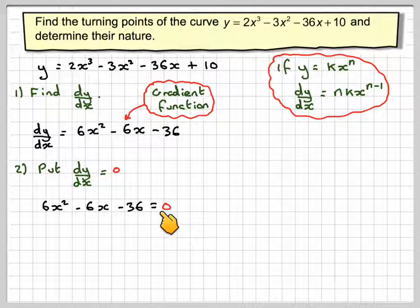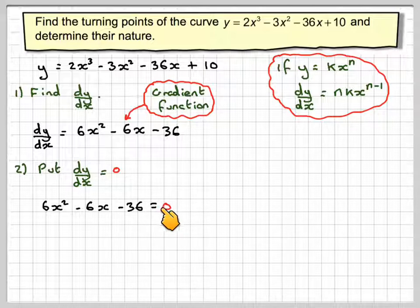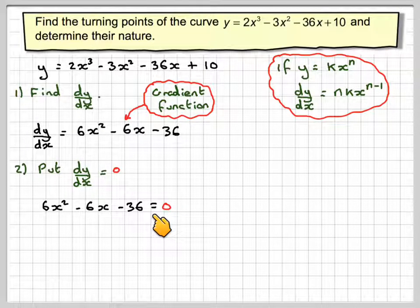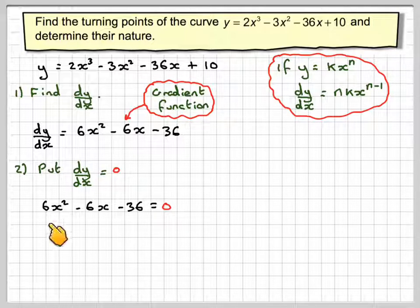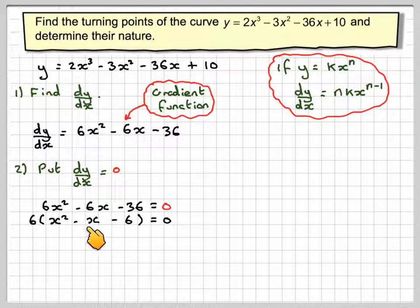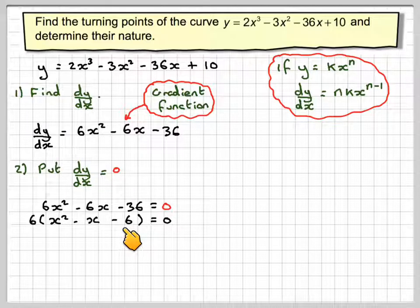Setting the gradient function equal to 0 will give me the values of x at the turning points - there might be one, two, or even three values of x where it equals 0, and the algebra will tell us how many. Since we've got a quadratic we can expect two points, which is what we see in the graph. There's a common factor of 6, so taking that out: 6(x² - x - 6) = 0.